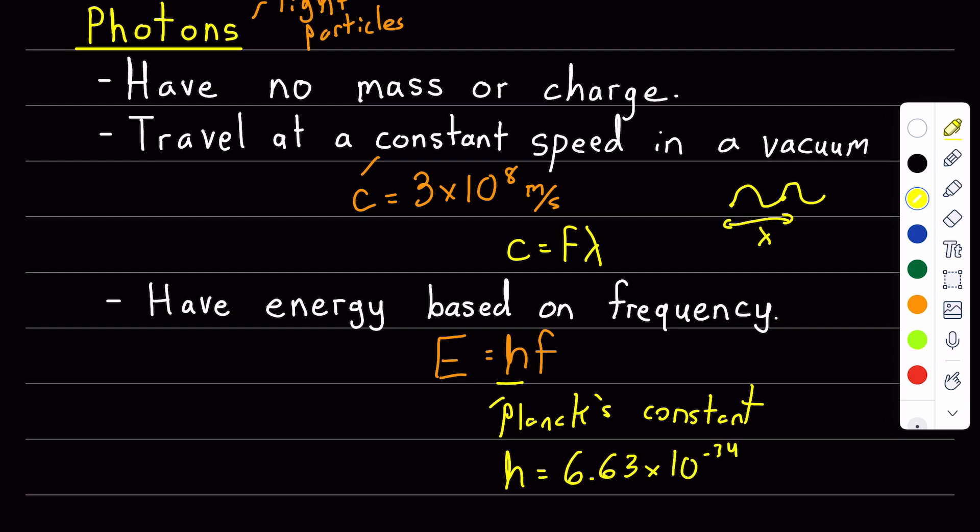The fact that energy only occurs at discrete amounts isn't really noticeable in classical physics because of how small Planck's constant is, which is 6.63 times 10 to the negative 34 joule seconds.